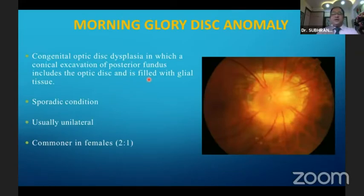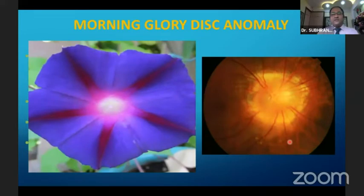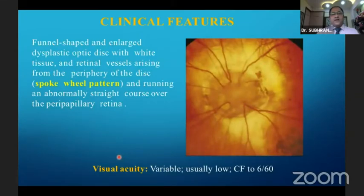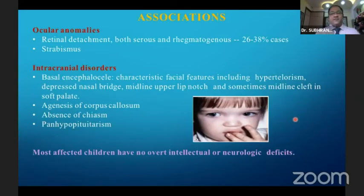The next entity is morning glory disc anomaly — a congenital optic disc dysplasia in which a conical excavation of the posterior fundus includes the optic disc, filled with glial tissue. It is usually a unilateral sporadic condition, more common in females, and is named because it resembles the morning glory flower. Pathogenesis involves failure of closure of the fetal fissure, making it a variant of optic nerve coloboma. Clinically: a funnel-shaped, enlarged dysplastic disc with white tissue and retinal vessels arising from the periphery in a spoke-wheel pattern. Visual acuity is variable and usually low; it may be associated with serous or exudative retinal detachment and multiple intracranial disorders.